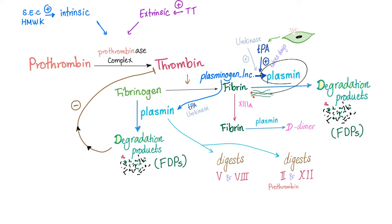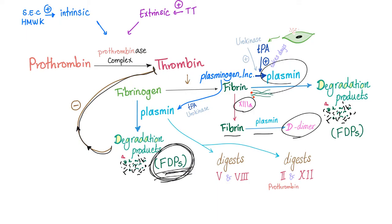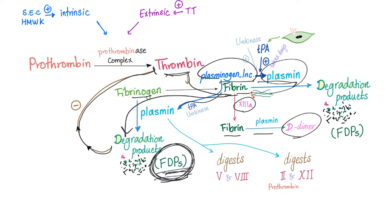Plasmin did an awesome job. Also, if fibrin is stabilized, plasmin will degrade it into a D-dimer. Those fibrin degradation products are going to inhibit thrombin, because if you have enough fibrin degradation products, why would you produce new ones? This is a negative feedback to inhibit thrombin and prevent new fibrin degradation products — because too much of anything is bad for you.